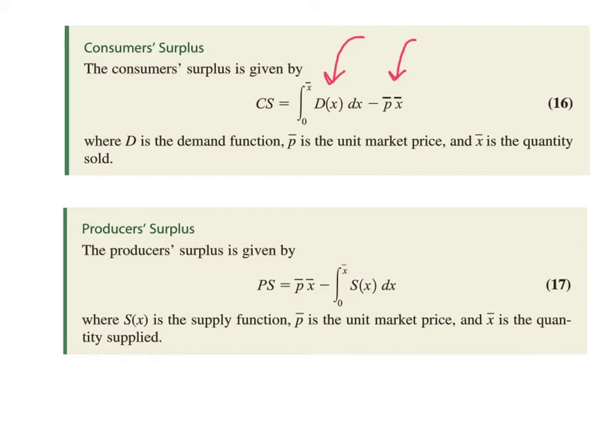For the producer surplus, you use the supply equation, the supply function, but we use the same p-bar and x-bar, so price and quantity. In a nutshell, we calculate the p-bar and the x-bar, and then we run these formulas and we can compute the producer surplus and the consumer surplus.